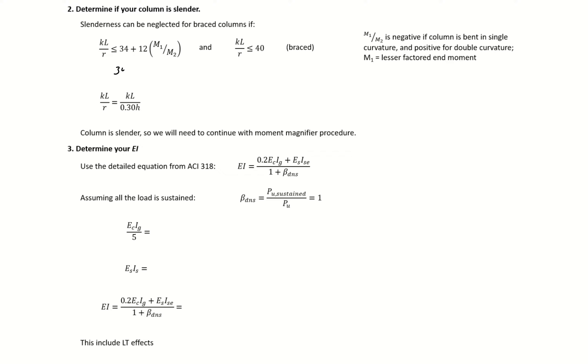We know our limit is 34 plus 12 times the ratio of M_1 to M_2, which is the same as our ratio of bottom to top eccentricity. M_1 is the lesser factored end moment, so we know this ratio is less than 1. Our ratio of 0.5 is okay, and it's bent in single curvature so we're going to be negative, so negative 0.5.